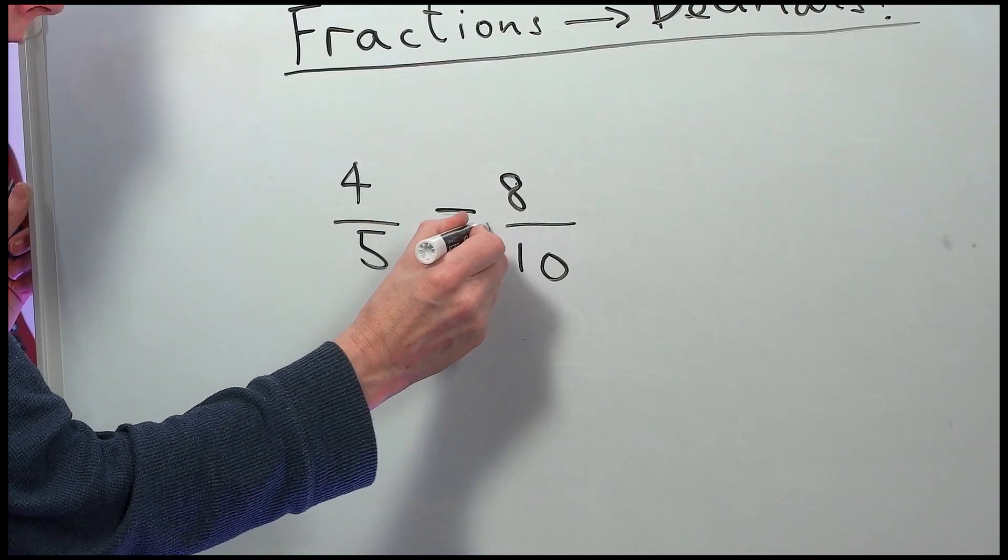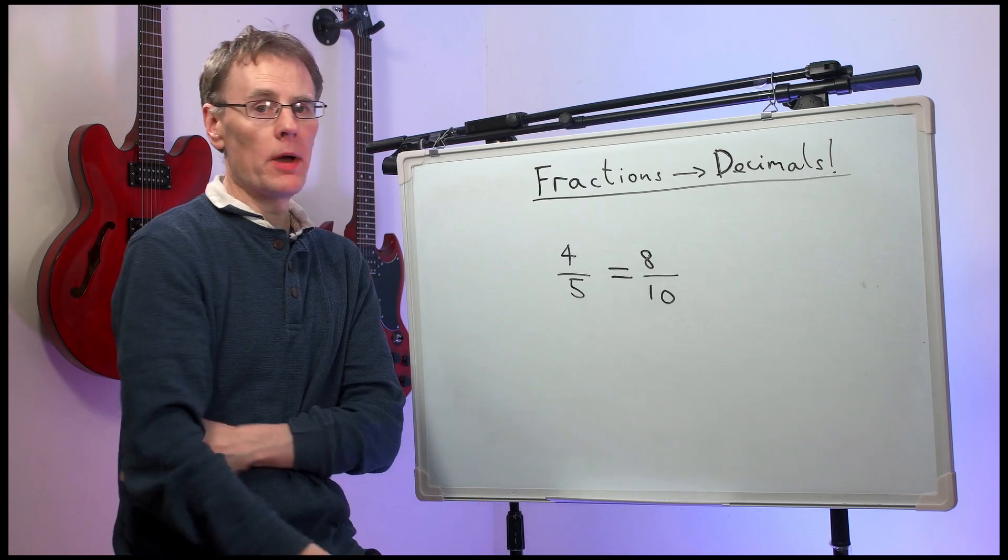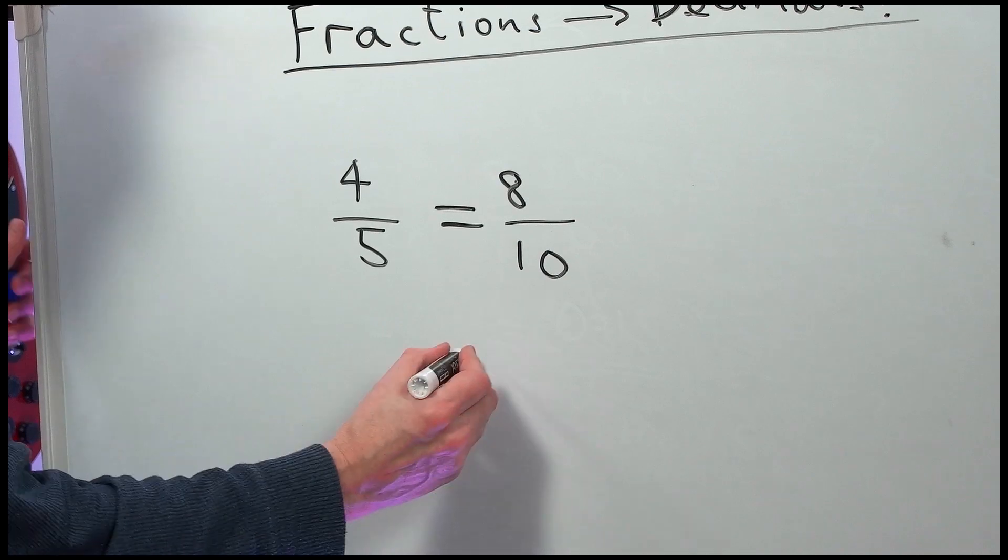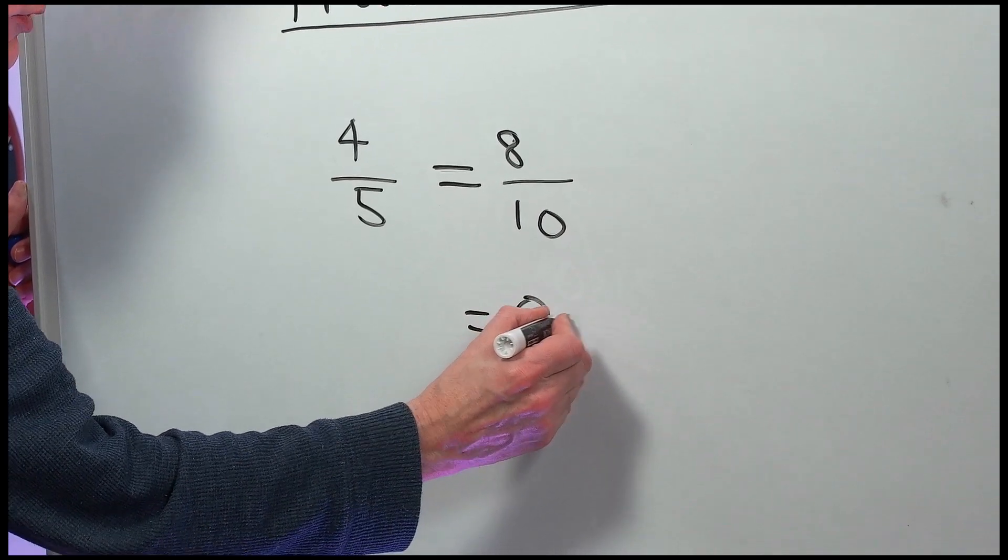When you multiply or divide the top and bottom of a fraction by the same number, it keeps it the same. So, four-fifths is the same as eight-tenths, which is 0.8.